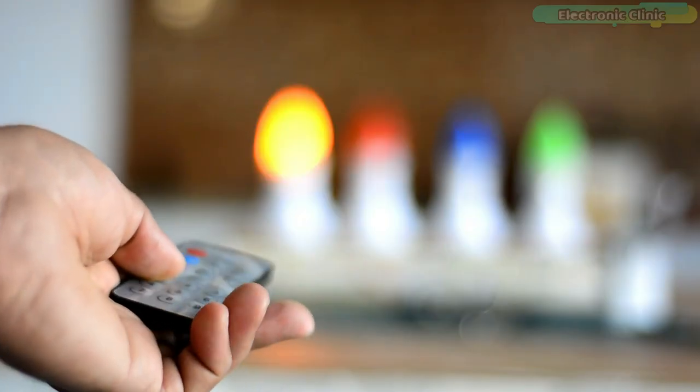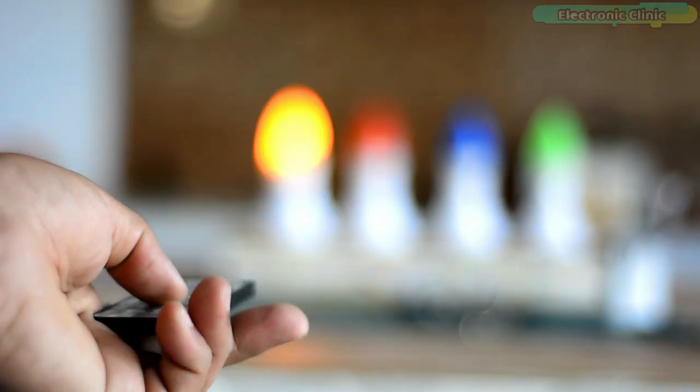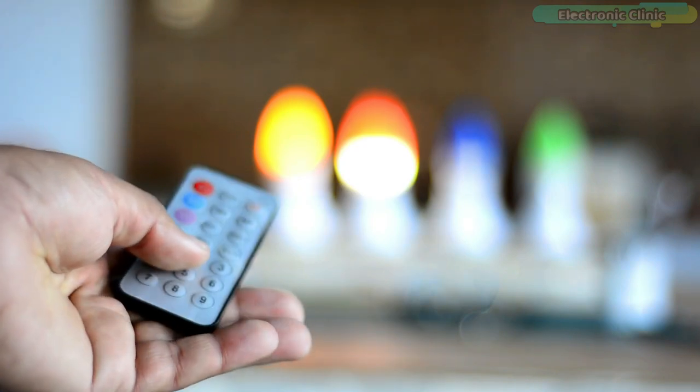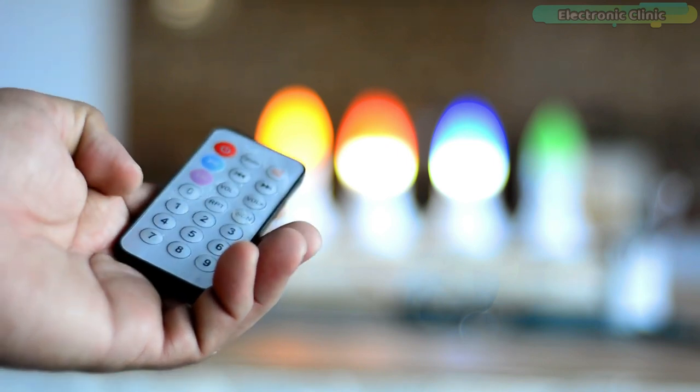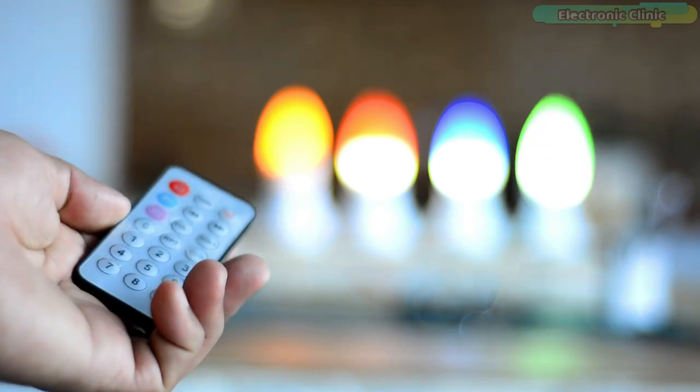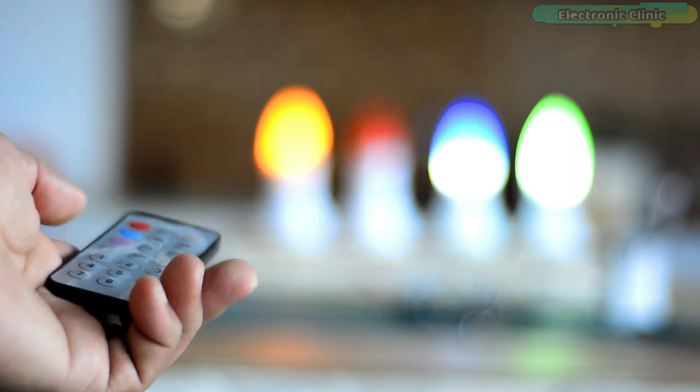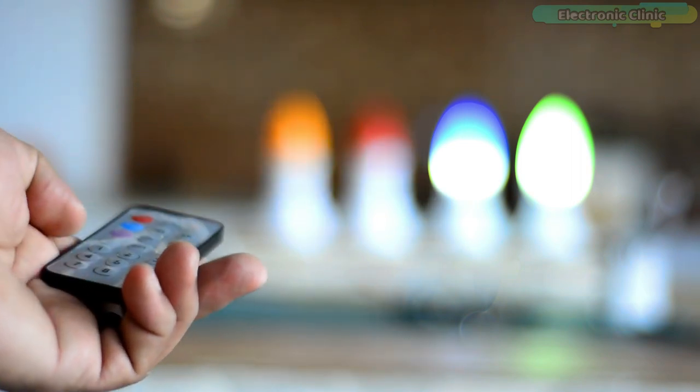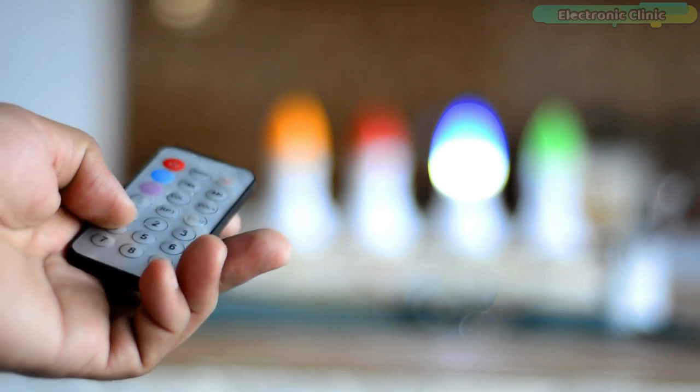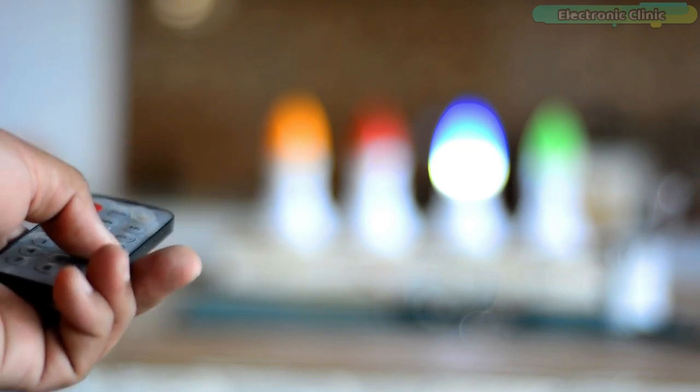Since I'm controlling four lights, that's why I'm using only four buttons: button number one, button number two, button number three and button number four on the IR remote controller. You can use the same buttons to turn on and turn off all the four lights. This IR remote controller has more than enough buttons which can be used to control all the electrical loads inside a room.